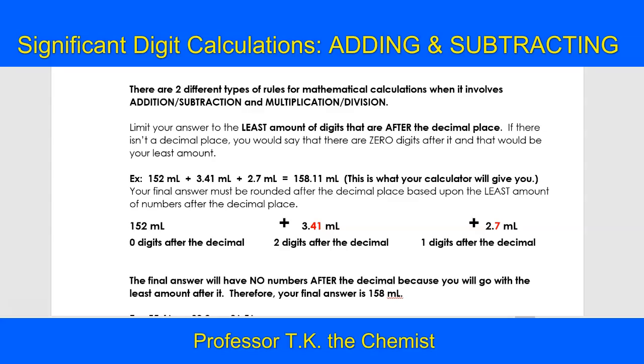So in this first digit here that I'm going to highlight in yellow, there aren't any numbers after the decimal. In 3.41 there are two numbers after the decimal, and in 2.7 there is one digit after the decimal. So in this particular case, the final answer would not have any numbers after the decimal place and your number would just be 158 milliliters.